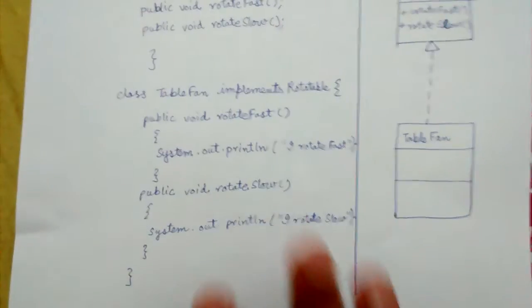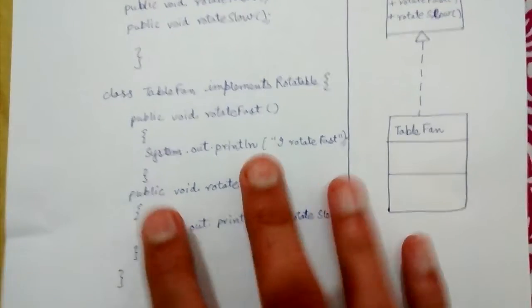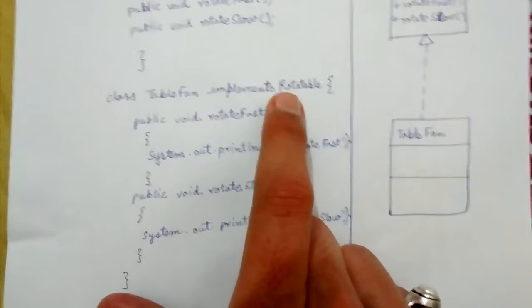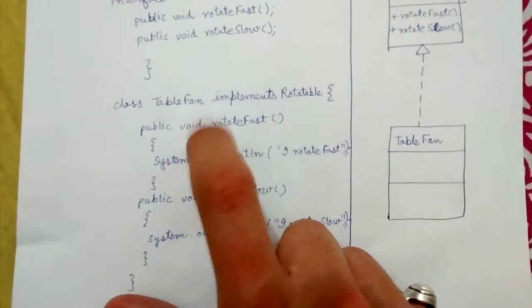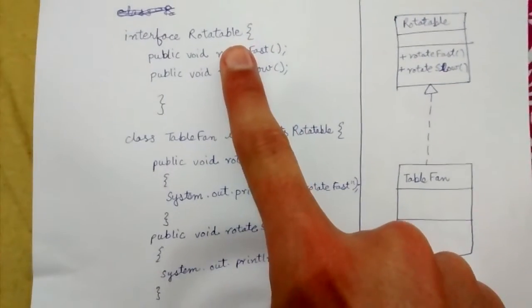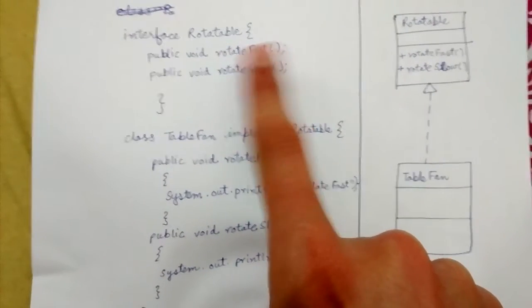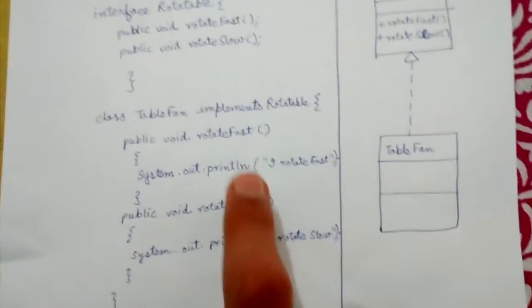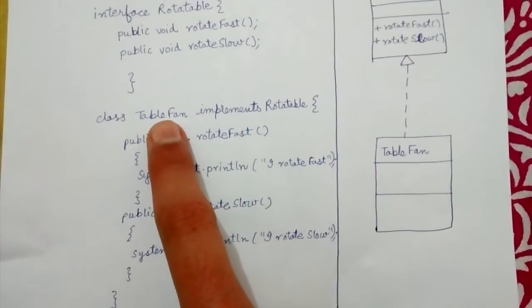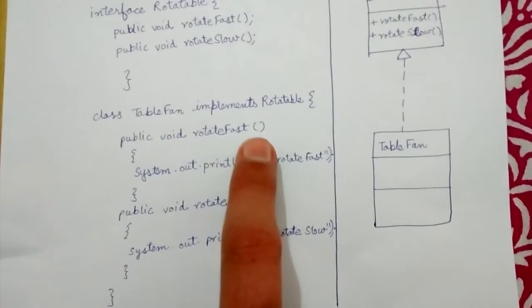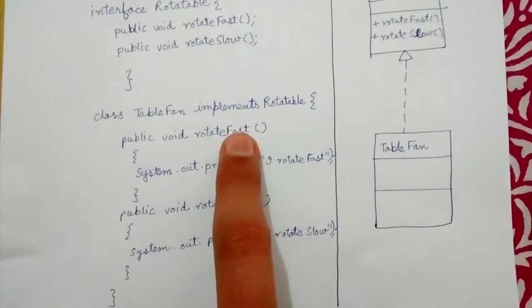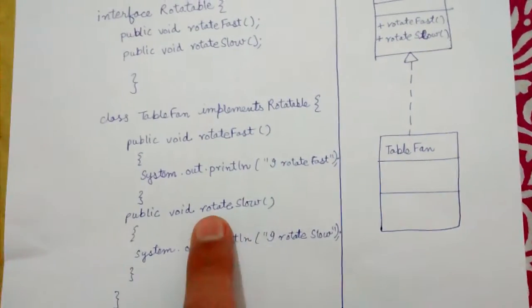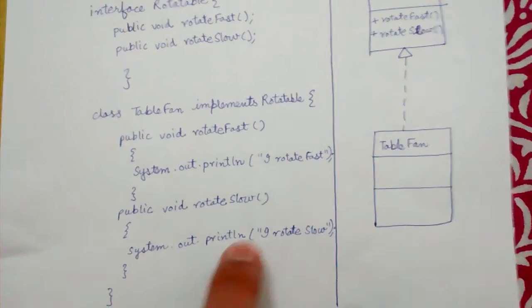We have just defined an interface and here we have defined a class called table fan which is implementing this interface. Whichever class is implementing this rotatable interface has to provide a definition for all its methods. So the table fan is now bound to provide a definition for rotate fast and a definition for rotate slow also.